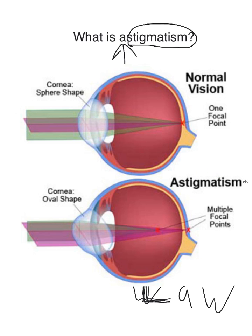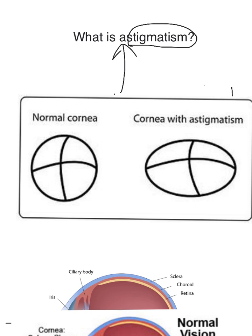The reason is because of the cornea. The cornea is an oval shape in astigmatism, and a spherical shape in a normal eye. I tell my patients that the cornea looks like a football, as opposed to a perfect sphere like a baseball. Here I have an illustration of a cornea with astigmatism — it looks like a football — and a normal cornea.